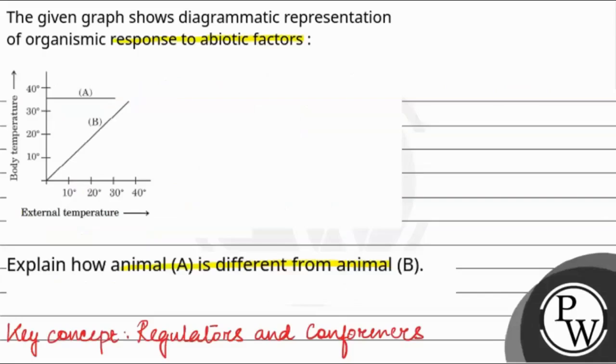So if we go back to the question, for organism A their body temperature remains constant, meaning even if the external temperature is increasing, their body temperature is constant. So A is a regulator, which is also called endotherm.